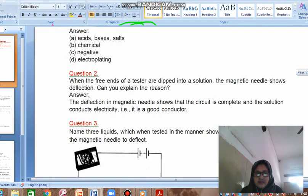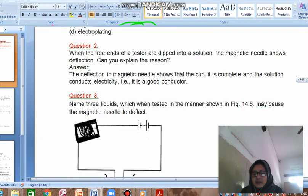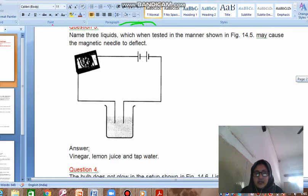When the free ends are dipped in a solution, the magnetic needle deflects because the deflection is magnetic in nature. The electric needle shows that the circuit is complete and the solution conducts electricity, that is it is a good conductor, and it also represents the magnetic effect of the current. In question number 3, you have to name 3 liquids which are good conductors - vinegar, lemon juice and tap water.